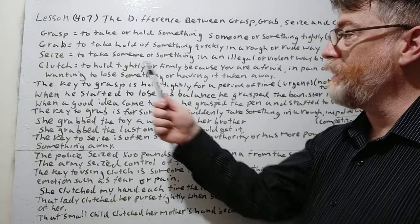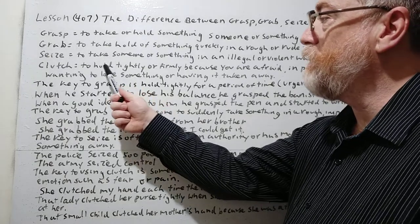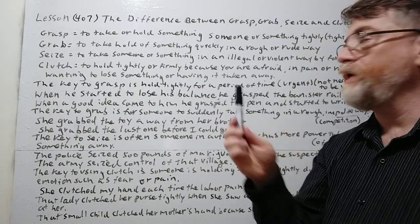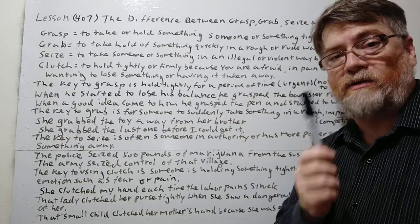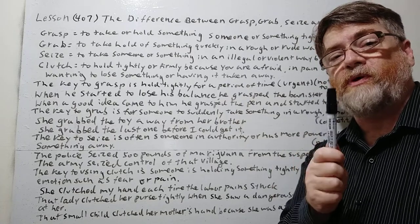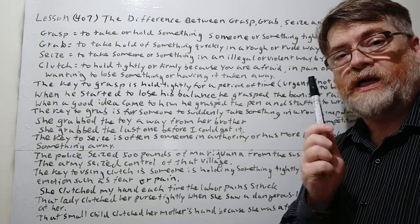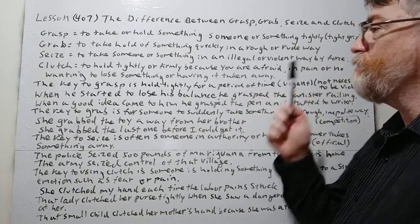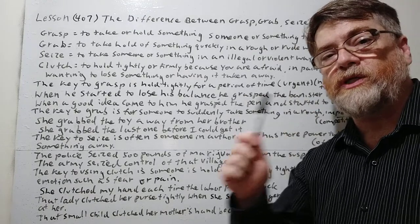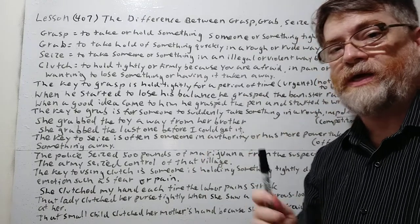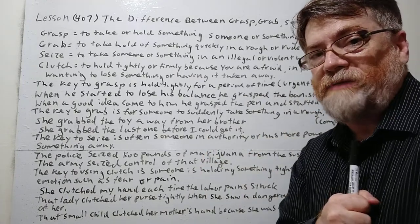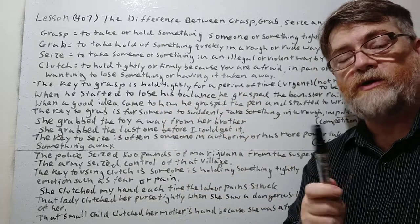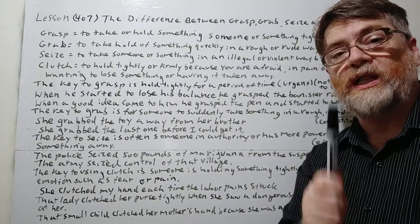Number four: clutch. To clutch means to hold something tightly or firmly because you are afraid. Clutch usually has to do with either fear, pain, or not wanting to lose something — afraid that somebody's trying to take something away from you is more like when you might use clutch.